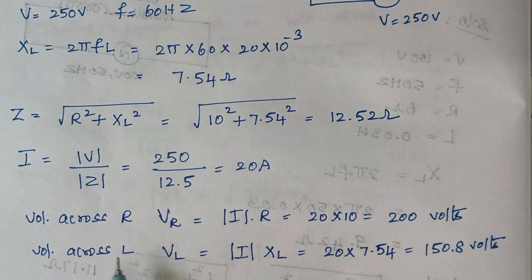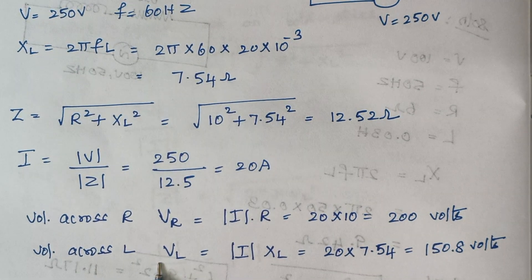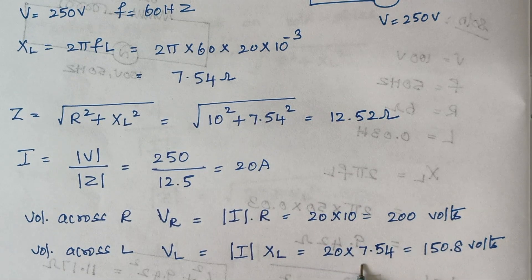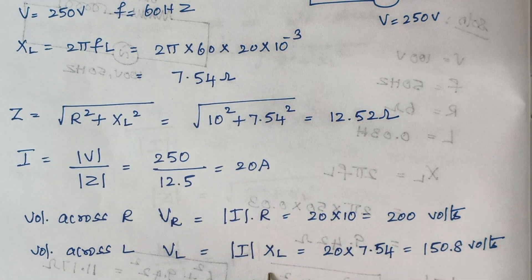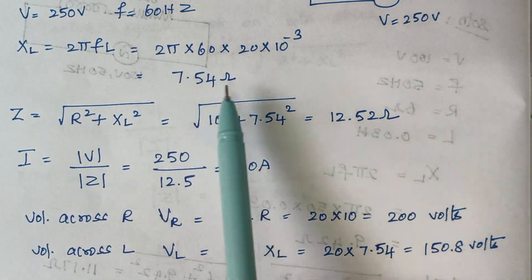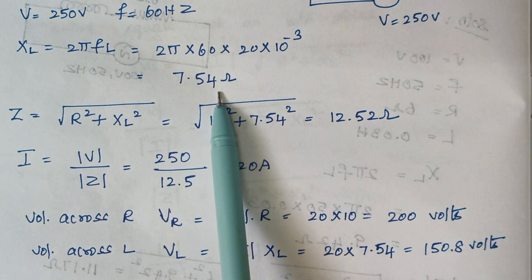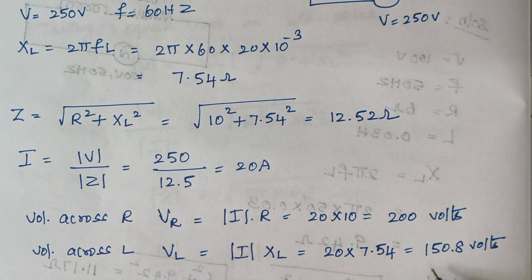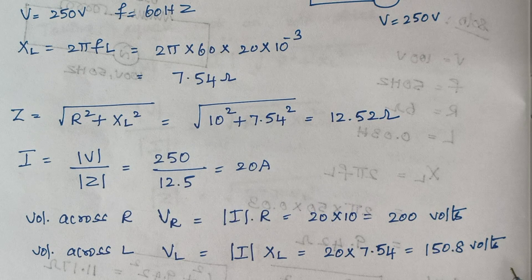Voltage drop across the inductor is I × XL. Therefore, 20 multiplied by the XL value of 7.54. Substituting gives the answer as 150.8 volts.